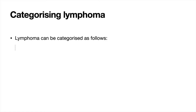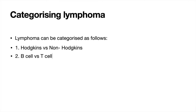Now let's categorize lymphoma, as this is quite useful when thinking about what type a patient might have. There are three main ways to categorize lymphoma. The first is Hodgkin's versus non-Hodgkin's. We can also categorize by cell type affected — B cell or T cell lymphoma. Finally, we can categorize by severity: high grade or low grade, which is important when it comes to choosing treatment options.